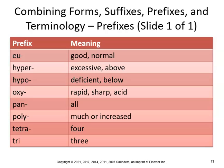Oxy means rapid or sharp acid — oxytocin is a hormone created by the posterior lobe that simulates childbirth. Pan means all — panhypopituitarism is a condition of deficiency in secretion of all hormones. Poly means much — there are lots of words that use that prefix. Tetra means four — tetraiodothyronine is a thyroid gland hormone containing four iodine atoms. Tri means three — triiodothyronine is a thyroid gland hormone containing three atoms of iodine.